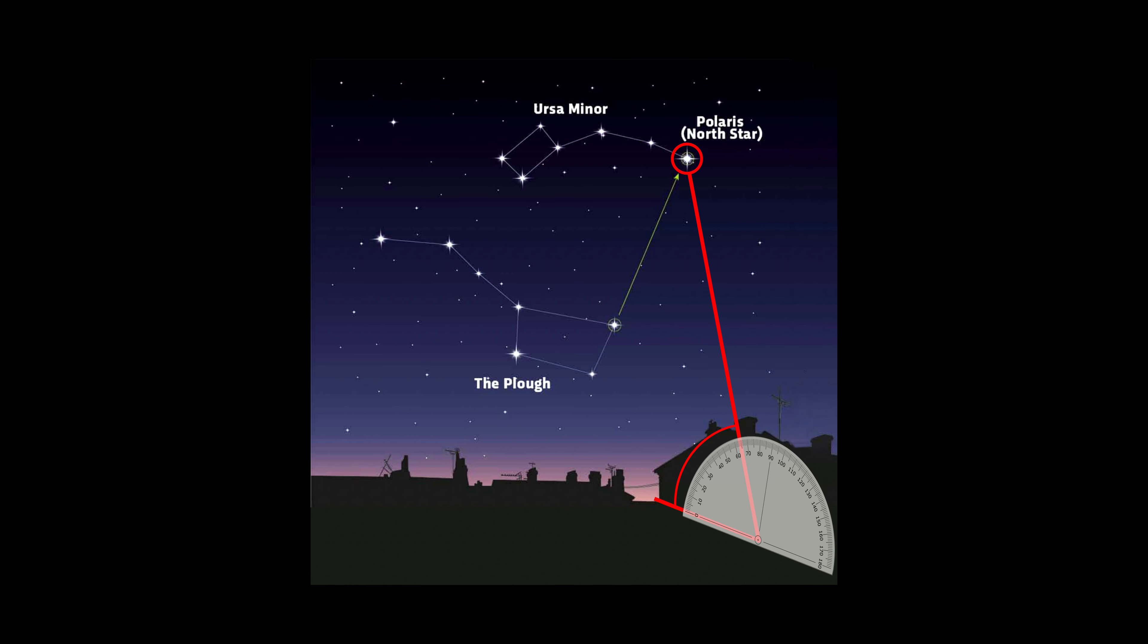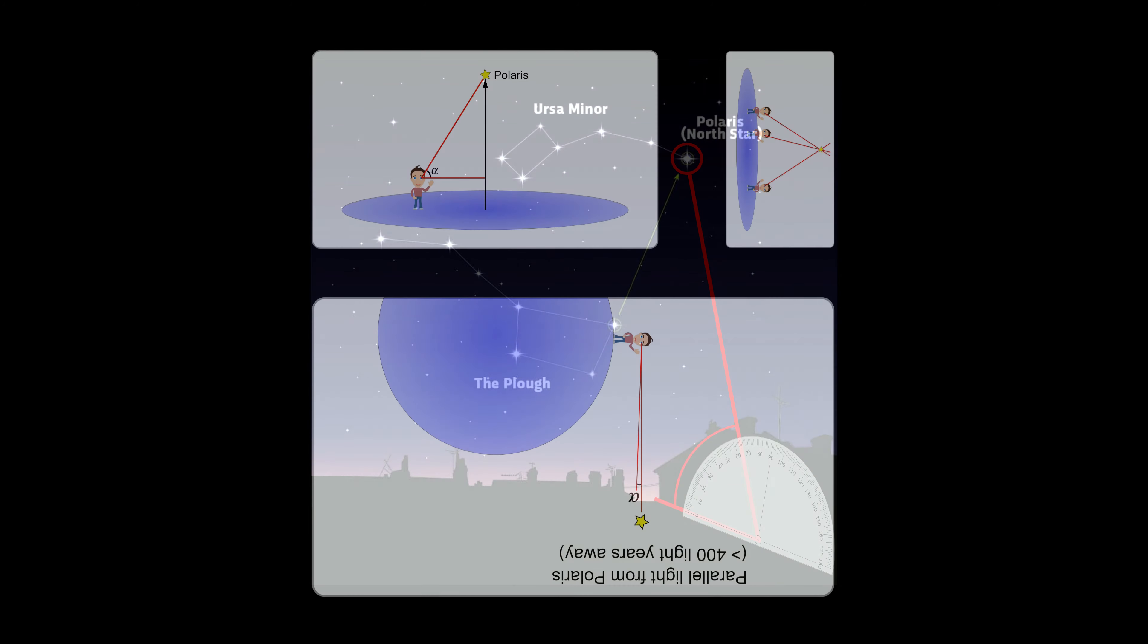This experiment is about measuring the angle from the horizon up to Polaris at different locations on Earth. But why is this interesting, you ask? Well, Polaris is a group of stars located very close to true north.